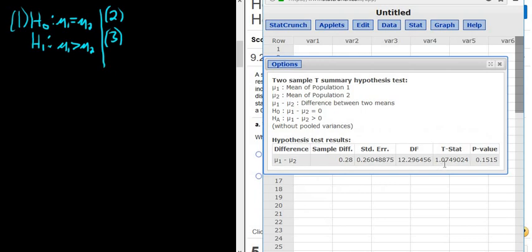So we want the test statistic. That's our t. So t is equal to 1.0749024. And the p-value in this case, p-value is 0.1515.